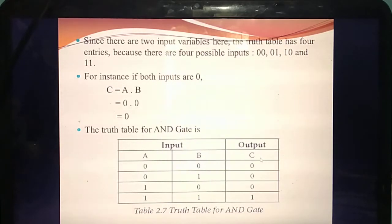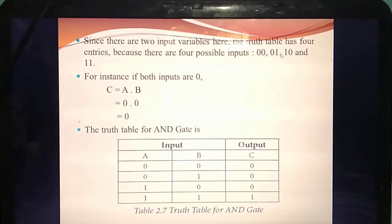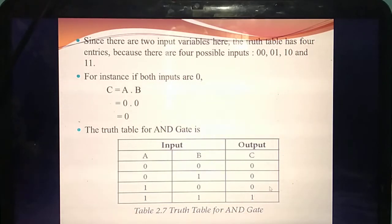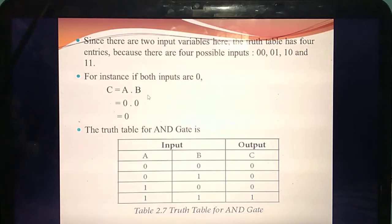This is the truth table you have already studied. How many possible inputs are there? Four: 0,0 then 0,1 then 1,0 then 1,1. How do you get the answer? C equal to A dot B means 0 into 0 = 0; 0 into 1 = 0; 1 into 0 = 0; 1 into 1 = 1. Only when both inputs are 1 do you get the answer 1. If they ask for AND gate, you should write what AND gate means, draw the diagram, and explain with the truth table — only then you get full three marks.